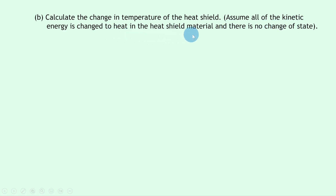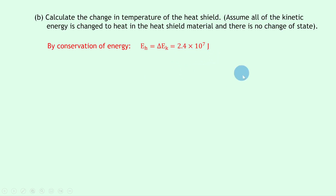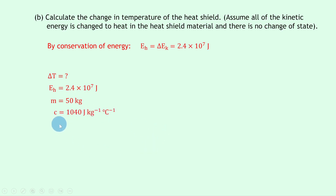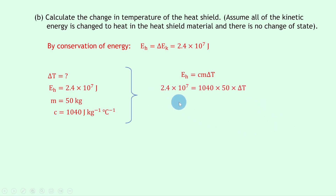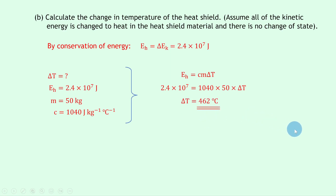Part b says to calculate the change in temperature of the heat shield, assuming all of the kinetic energy is changed to heat in the heat shield material and there is no change of state. Assuming no energy losses, by conservation of energy, E_H equals the change in kinetic energy = 2.4×10⁷ joules. We know m = 50 kg and c = 1040 J/kg°C. Using E_H = cmΔT: 2.4×10⁷ = 1040 × 50 × ΔT. Dividing gives ΔT = 462 degrees Celsius — a very large change in temperature.